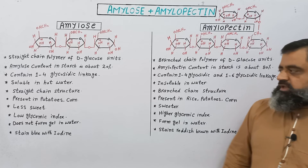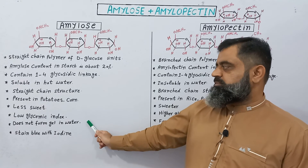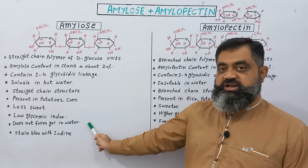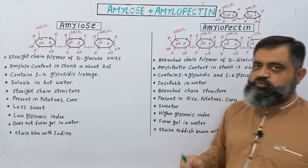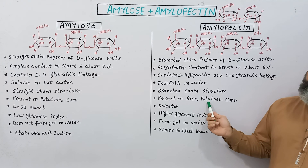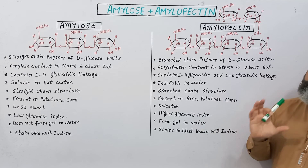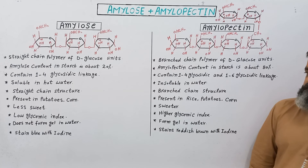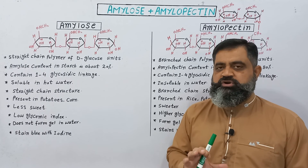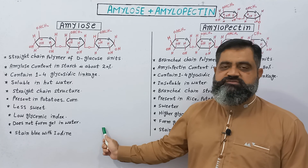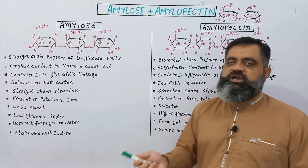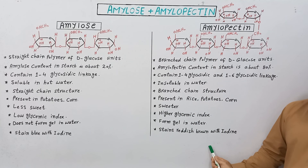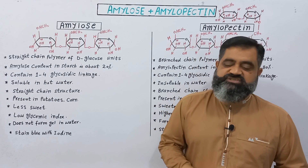Amylose starches do not form a gel when dissolved in water because they are soluble in water and dissolve into it. Amylopectin starches do not dissolve in water, so they form a gel-like structure in water. In a laboratory test, amylose starches give a blue color with iodine, while amylopectin starches give a reddish-brown color with iodine. That's all for today — see you in the next lecture.